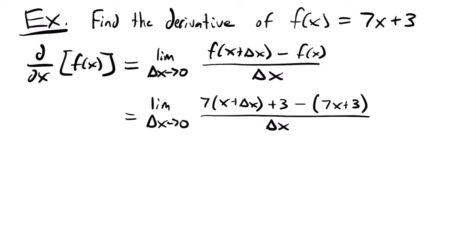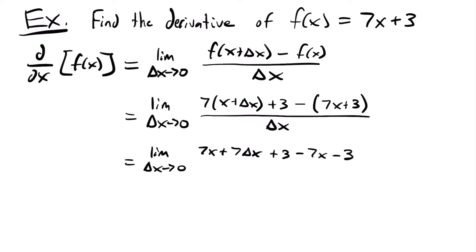This is all divided by delta x. We're going to distribute our 7 and our negative and then simplify. So this equals the limit as delta x approaches 0 of 7x + 7 delta x + 3 - 7x - 3. We just distributed 7 to each part of the first quantity and the negative to each part of the second quantity, all divided by delta x.